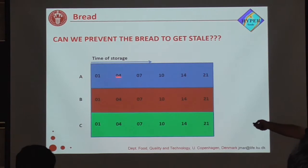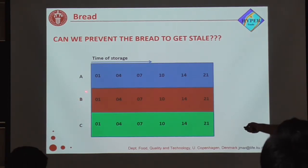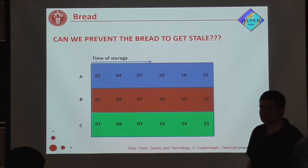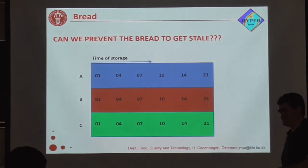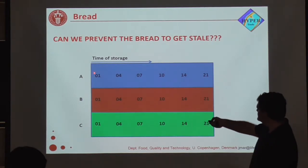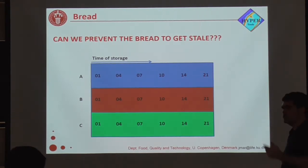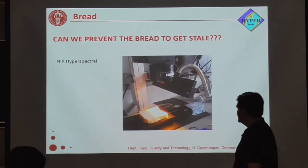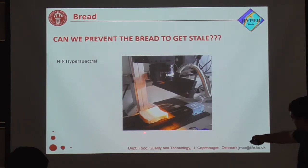This is bread A — the normal bread — and B and C with enzyme 1 and enzyme 2. Obviously I cannot tell you the specific enzyme. The storage times were: one day, four, seven, ten, fourteen, and twenty-one days. We made the bread, stored it, and then measured it with a hyperspectral system. Here we have sensors, the light, and a conveyor belt. This is laboratory scale, not company scale, because they need to know what is going on in the surface of the bread.